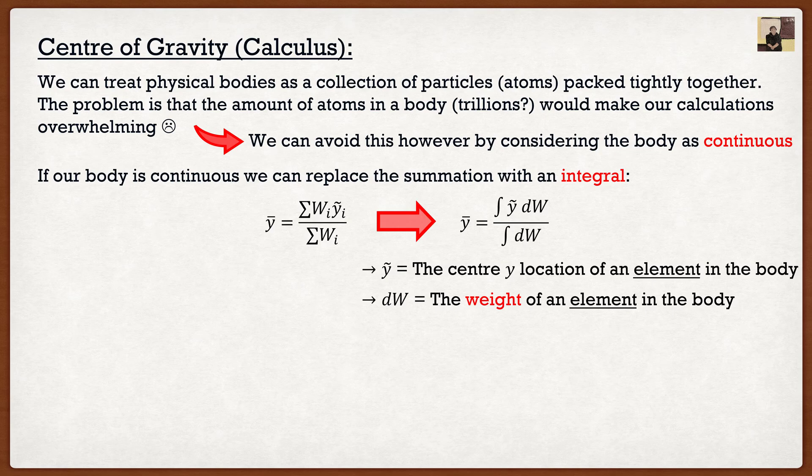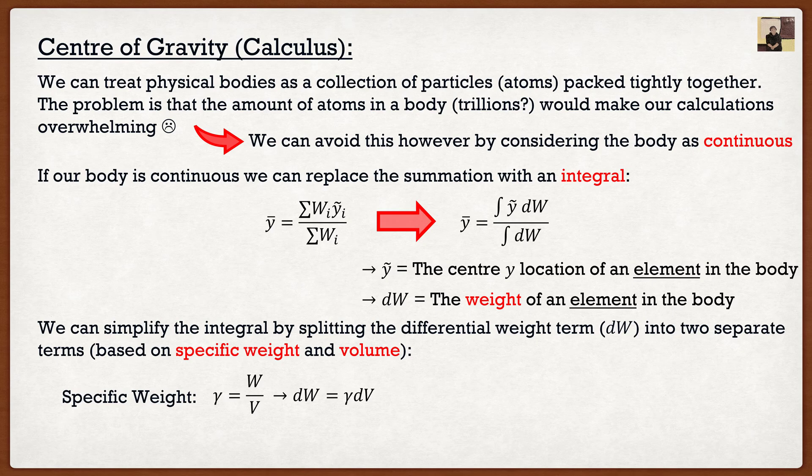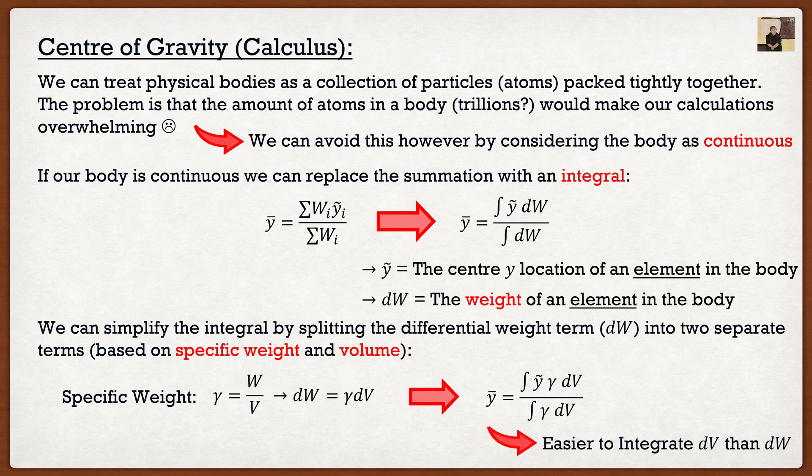We actually have one problem. It is very difficult to differentiate something with respect to weight. So we're only going to make one modification to this formula. We are going to split that weight term into two separate terms, specific weight and volume. Specific weight is simply going to be the total weight of our body divided by the total volume of our body. We can actually say that our differential weight term dw is equal to gamma, our specific weight, times dv. And if we were to substitute that into our formula, we get the following formula. The only difference now is we have that specific weight term at the top and bottom, and instead of differentiating with respect to weight, we're actually differentiating with respect to volume, which is a lot more simple.